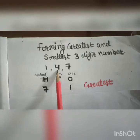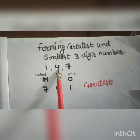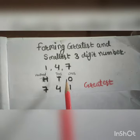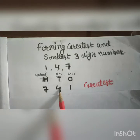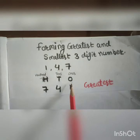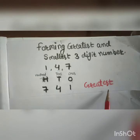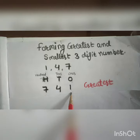Next is 4, because 4 is smaller than 7, so 4 goes in the tens place. Now the smallest number is 1, so 1 goes in the ones place. So our greatest number is 741.